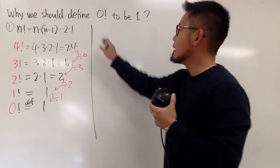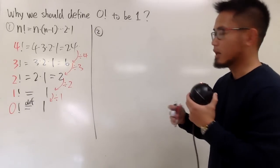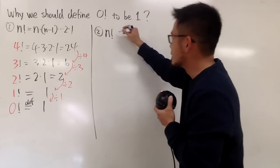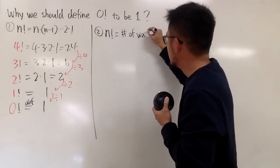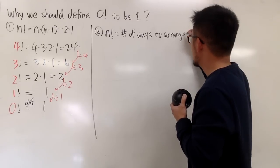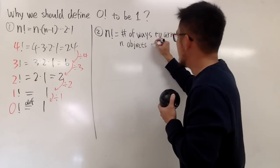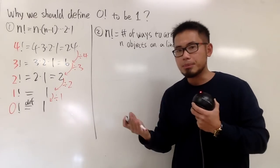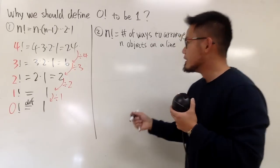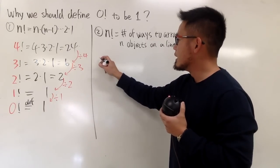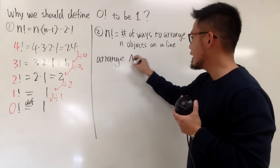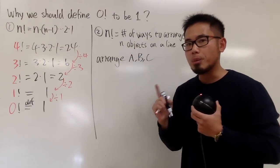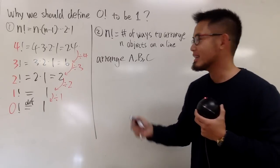Here is the second reason, which is more like a combinatorial argument. Recall that n factorial calculates the number of ways to arrange n objects on a line. For example, 3 factorial: we can arrange 3 letters — A, B, and C. There will be a total of 6 configurations, because arrangement matters; A, B, C is very different from A, C, B.